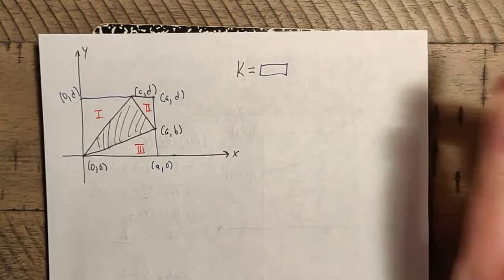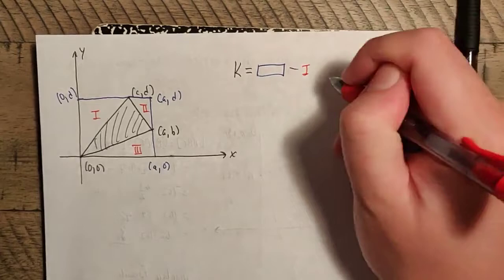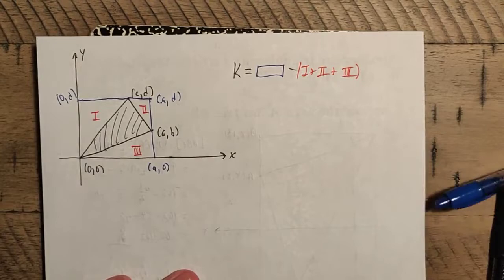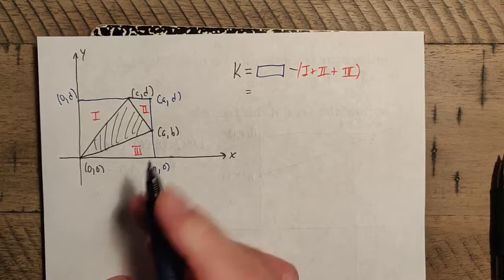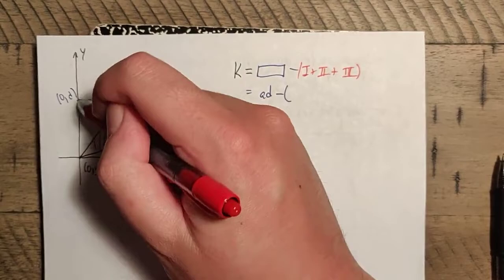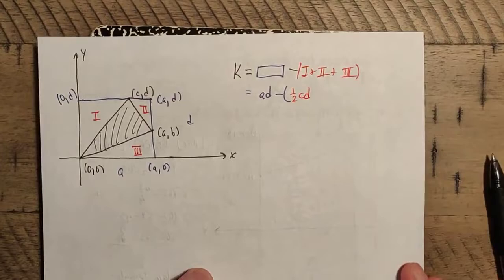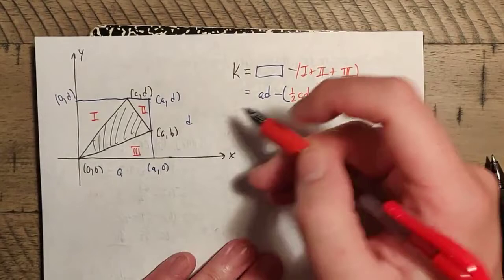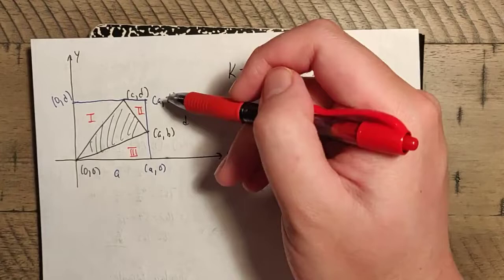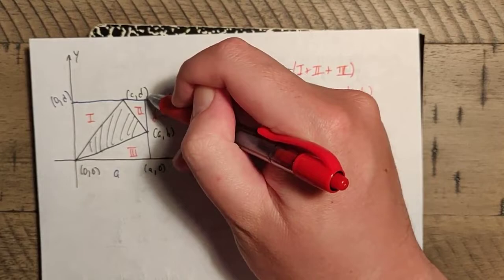So K equals the rectangle area minus the sum of areas one, two, and three. The blue rectangle has width a and height d, so its area is ad. Triangle one has height d and base c, giving ½cd. Triangle three has length a and height b, giving ½ab.